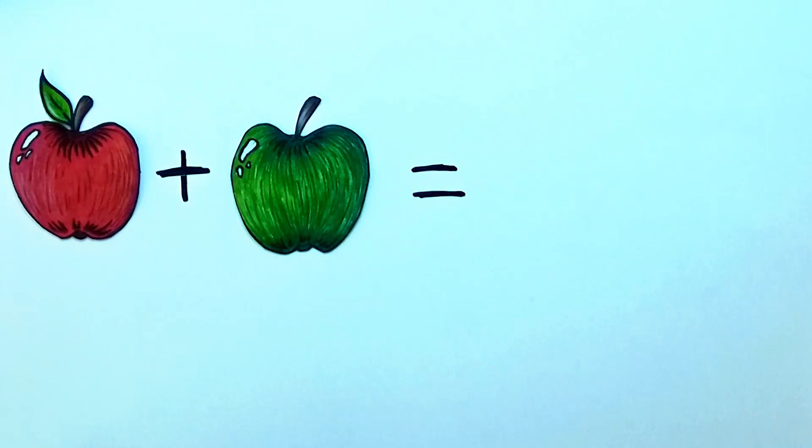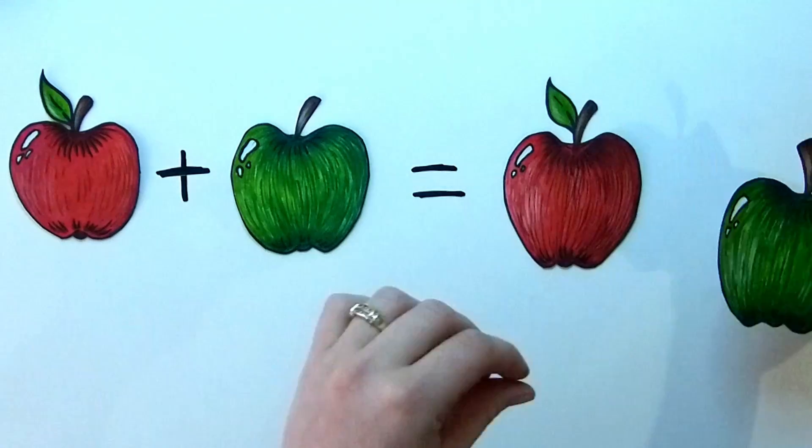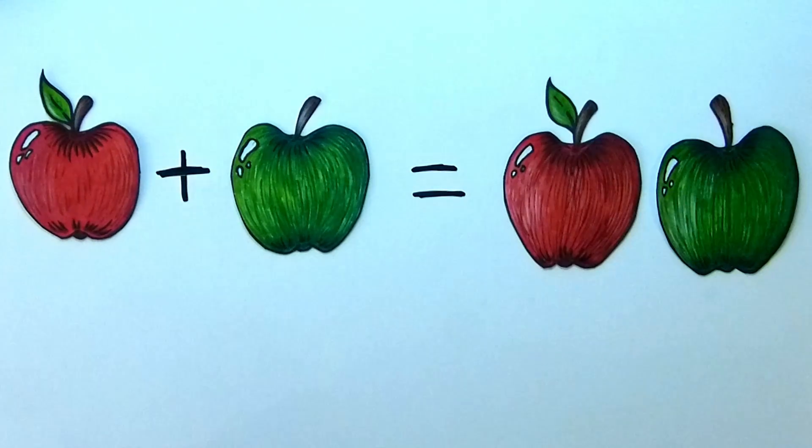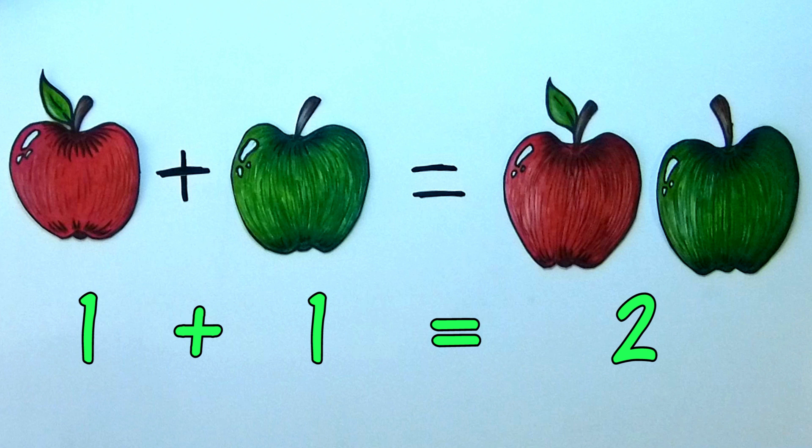One apple plus one apple equals two apples. In numbers, the sum looks like this.